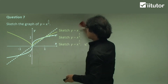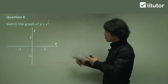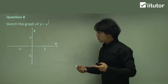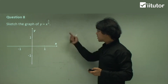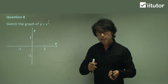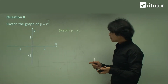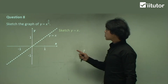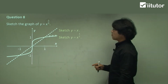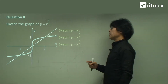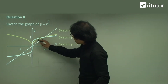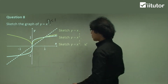That was question 7. Question 8: x to the power of 2 over 5. Can you see the process and order of steps? Firstly, sketch y equals x. Then sketch x to the power of 1 over 5. Then square it. Negative becomes positive because it is squared, so the left side goes up. It is still going up because this is still less than 1. That was question 8.